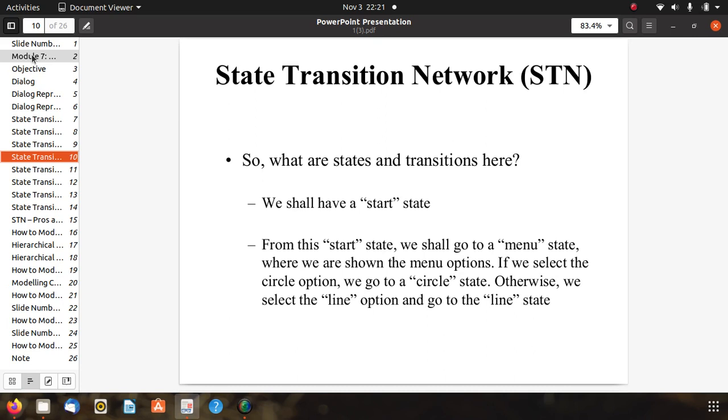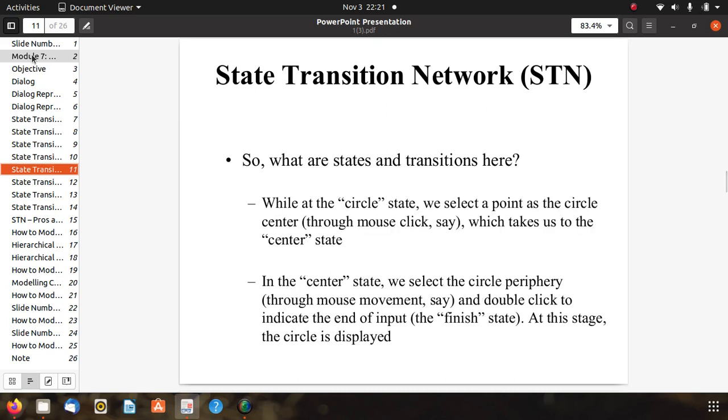While at the circle state, we select a point at the circle center using mouse click, which takes us to the center state. In the center state we select the circle periphery using mouse movement and double click to indicate the end of input, the finish state. At this stage a circle is displayed.